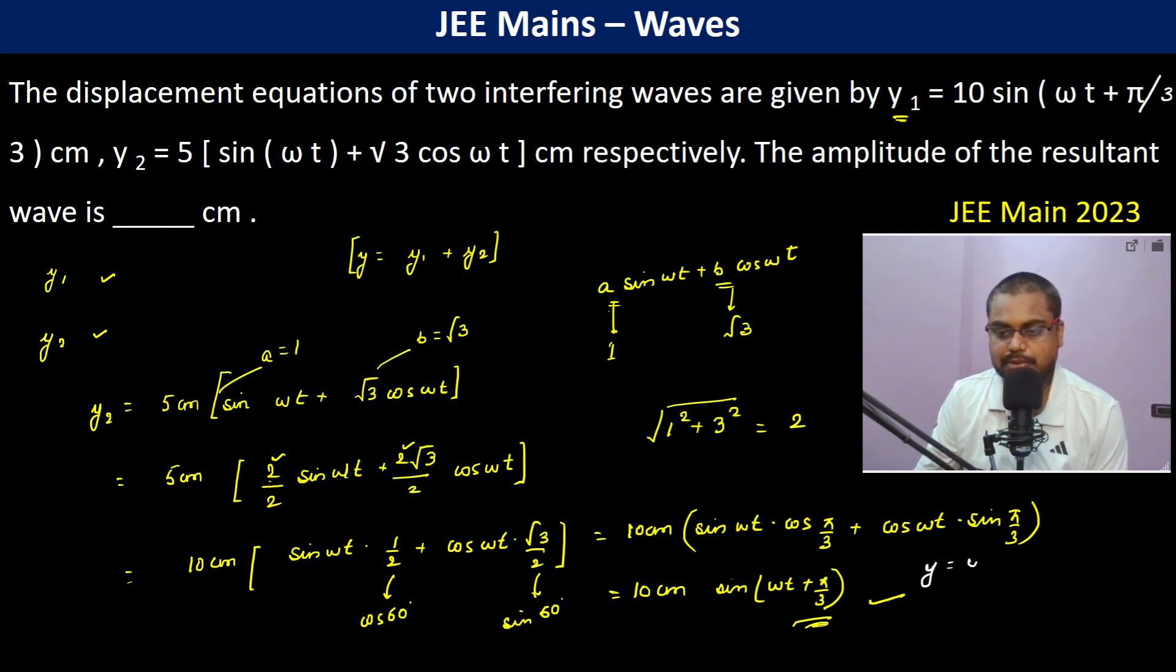y becomes y₁ plus y₂ which both are same. So this becomes 10 centimeter sin ωt, which becomes 20 centimeter sin(ωt + π/3).